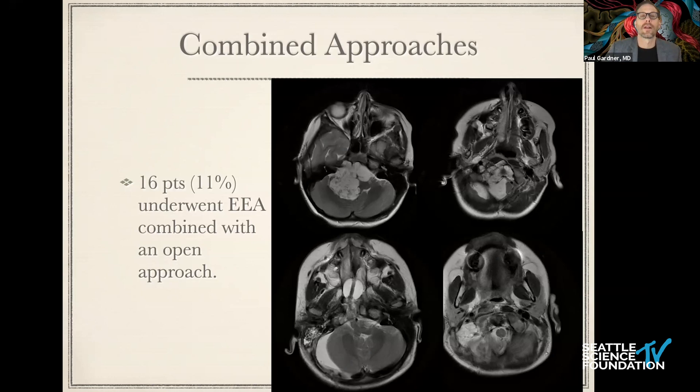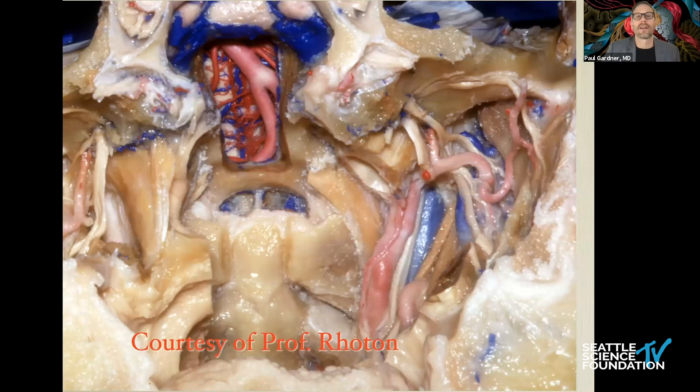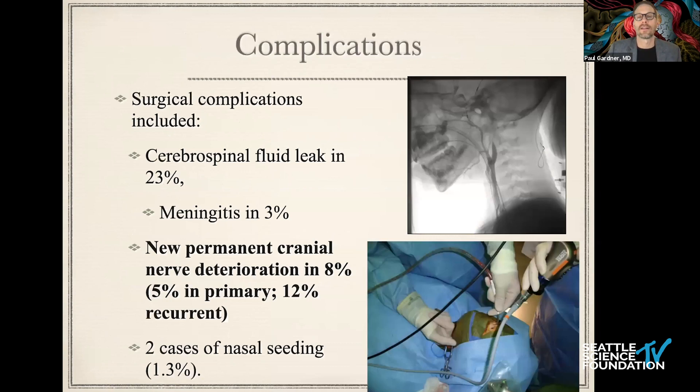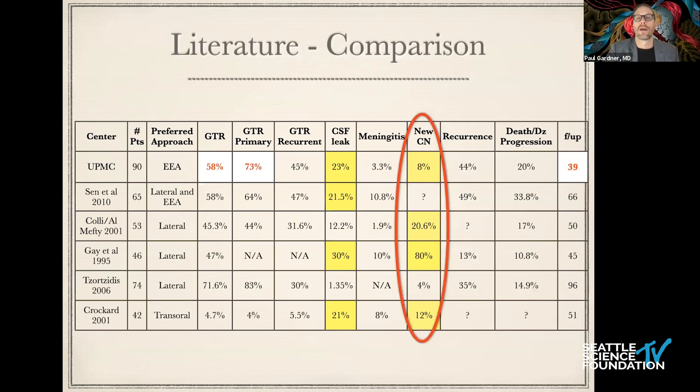We've improved our understanding of how to extend more laterally. By accessing these tumors in the midline, we maintain a lower rate of cranial neuropathy. These are midline tumors pushing the nerves more laterally, so we have a very low rate of cranial nerve deterioration — probably lower than what's reported in the literature for open approaches. That's purely a function of corridor selection.